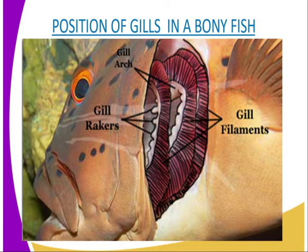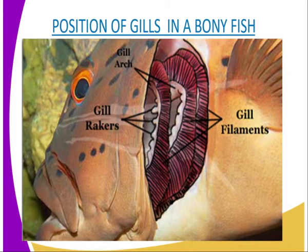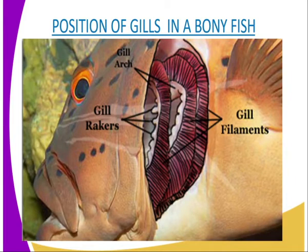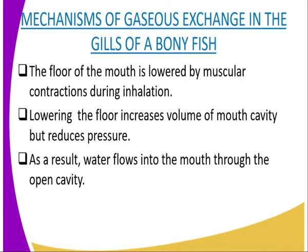A large plate known as the operculum protects the gills on either side of the head. The operculum, which is visible on this side, is protecting the gills — and on the other side not visible from the screen, the gills are also protected by the operculum. We are now going to see the mechanism of gaseous exchange, especially in a bony fish.